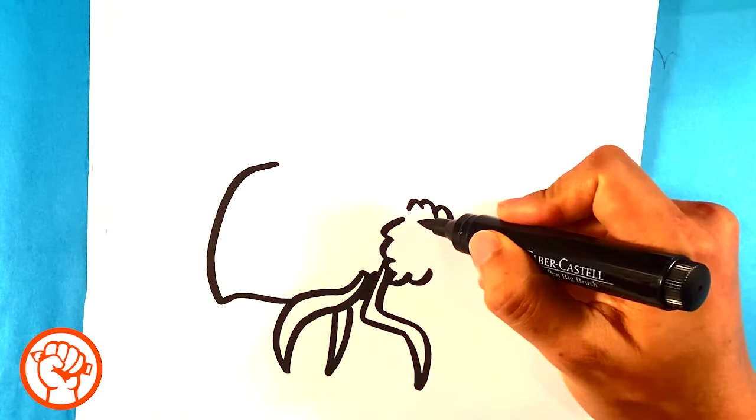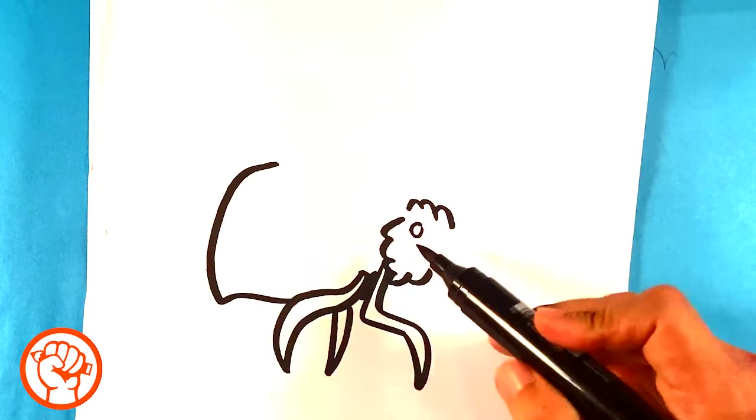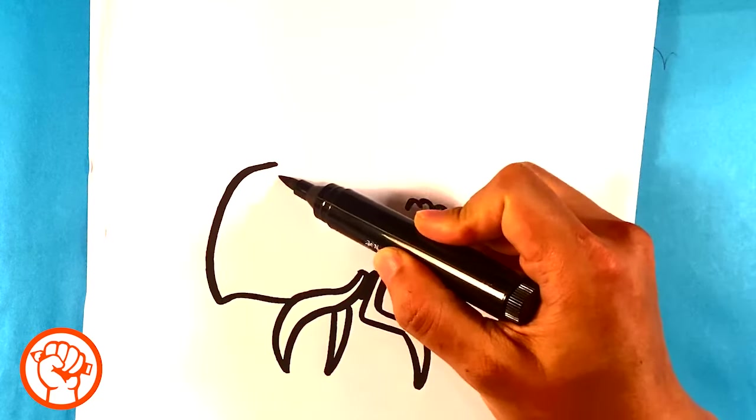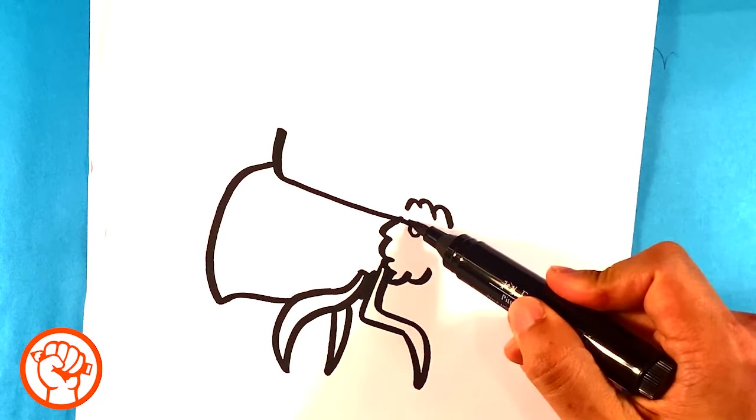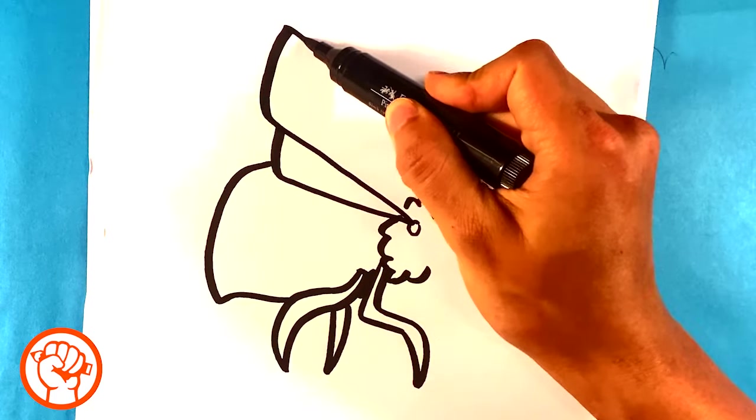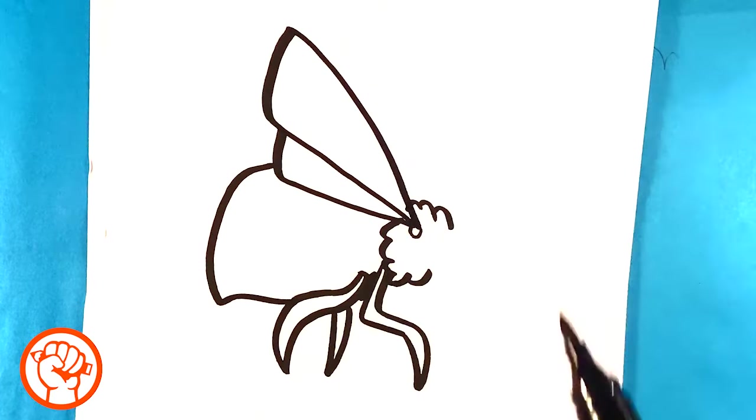I'm going to go over here and I'm going to put in a little circle like that. That's going to be the attachment to the wings and I'm going to pull a line out. See, I have the wing back there. A bit of a double wing.